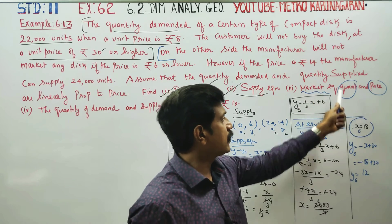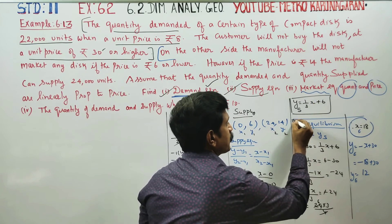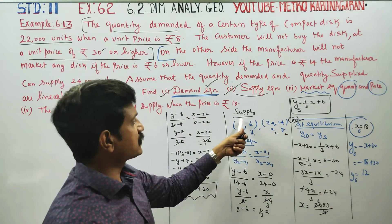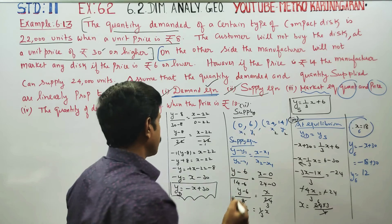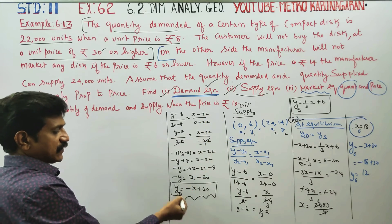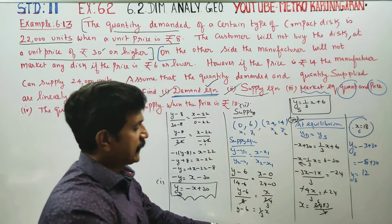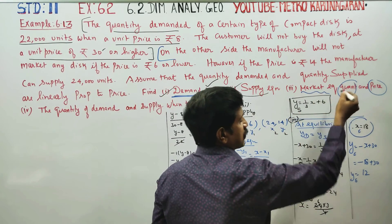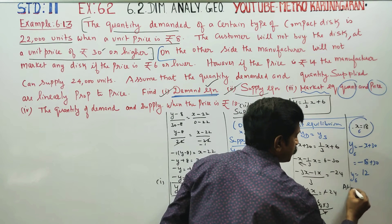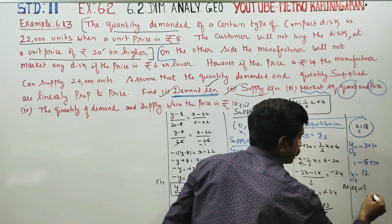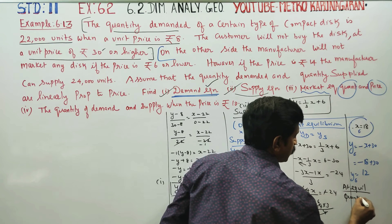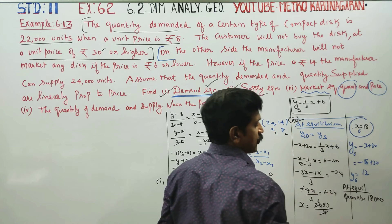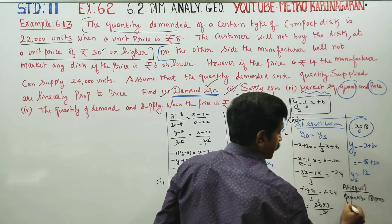The demand function is the first part, the supply equation is the second part, and the market equilibrium is the third part. At equilibrium, the quantity is equal to 18,000 units at a price of Rs.12.